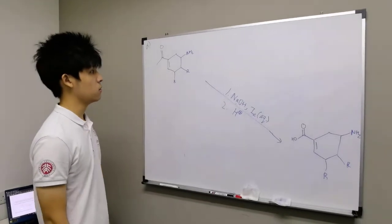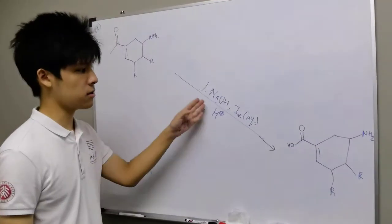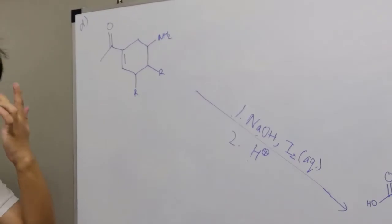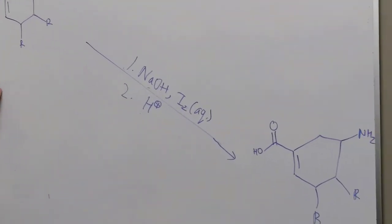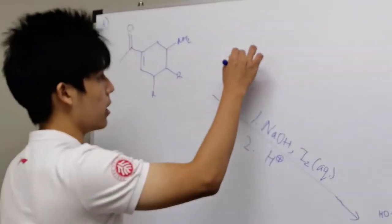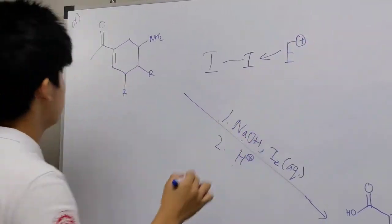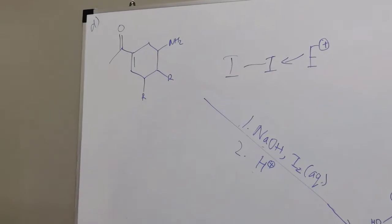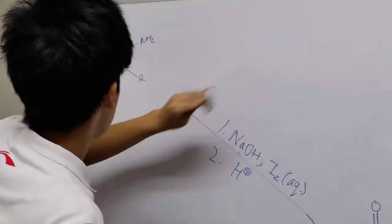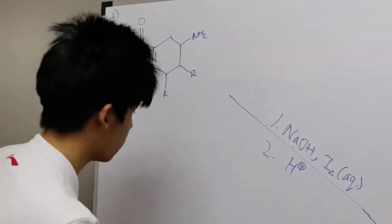For the second half of the reaction, you are supposed to form this product from this reactant. The reagents are sodium hydroxide, I₂, and H⁺. This is quite obviously the iodoform reaction. In the iodoform reaction, I₂ is an electrophile. So we need to make this carbon nucleophilic. Similarly to the previous reaction, to make it nucleophilic, we will just remove a proton to form the enolate.